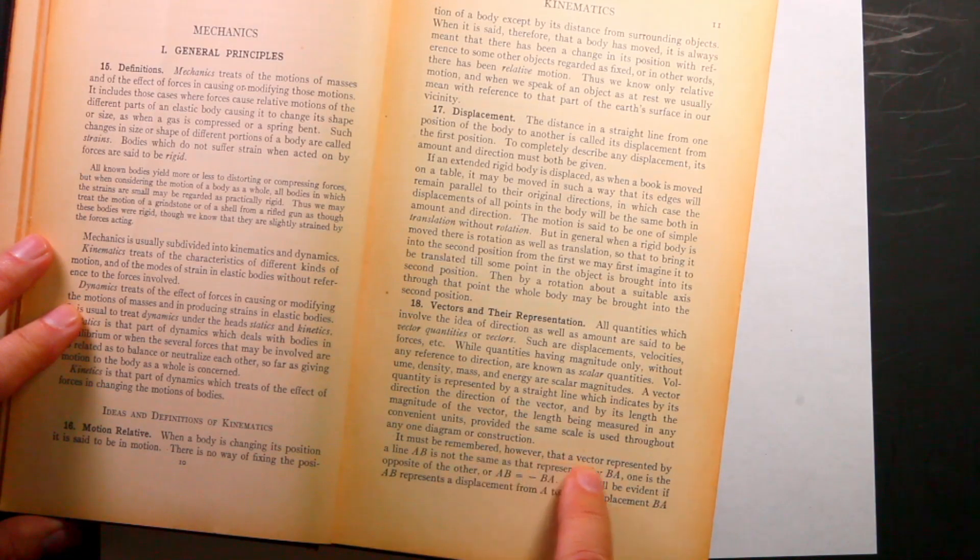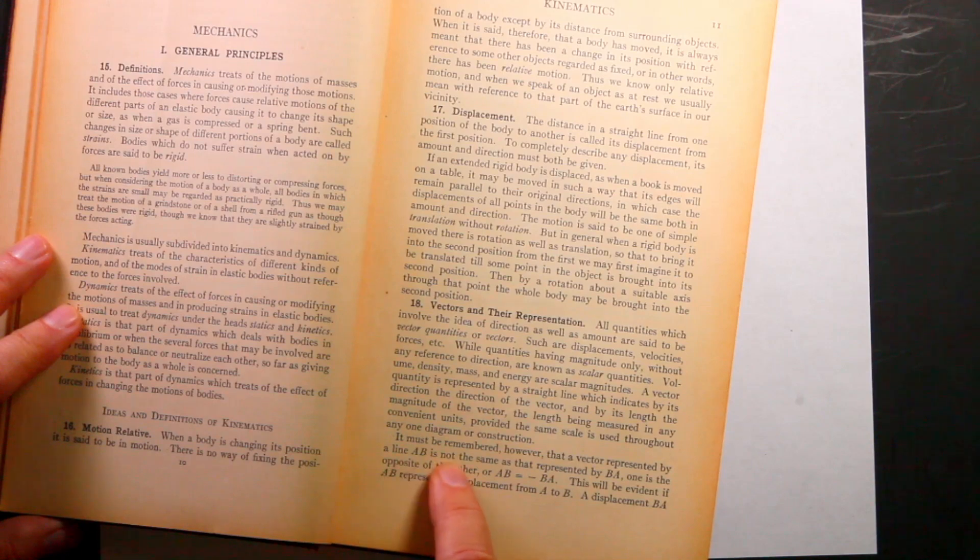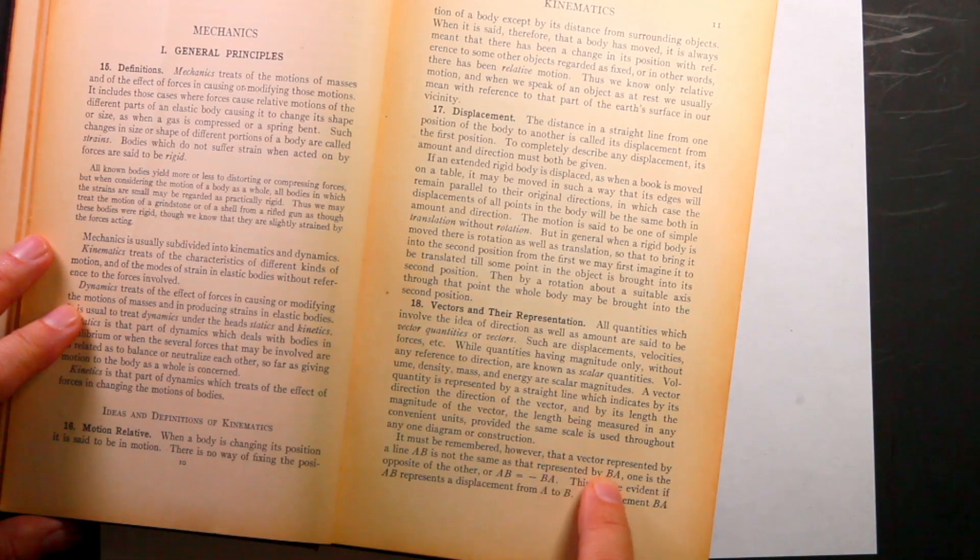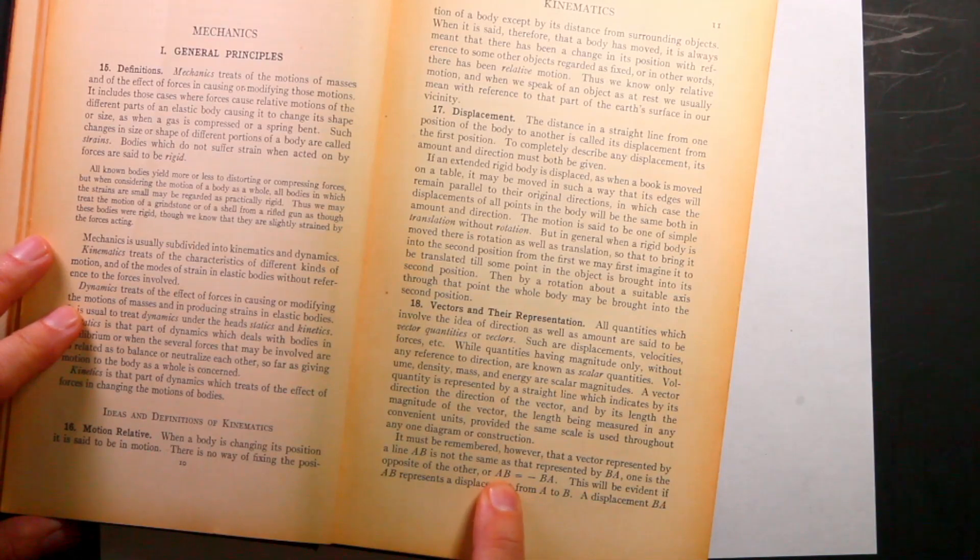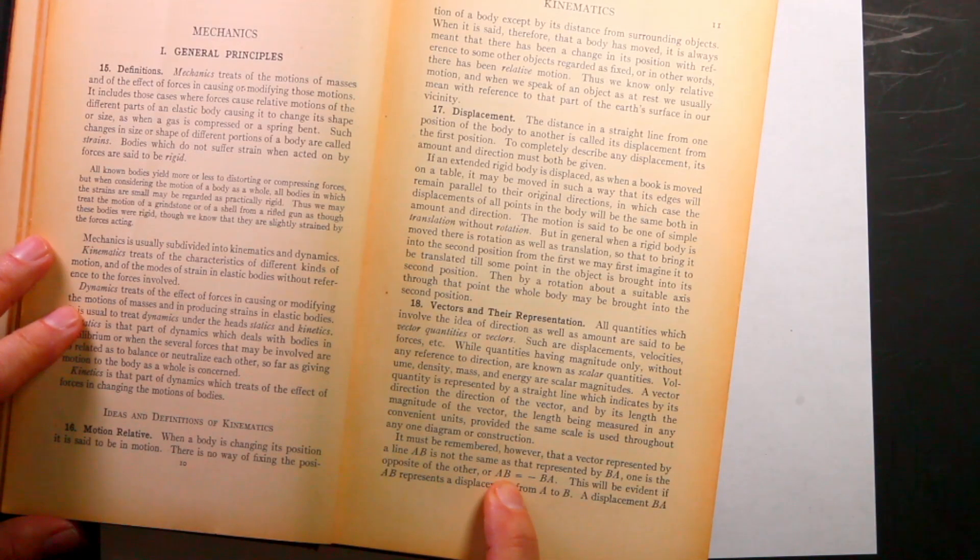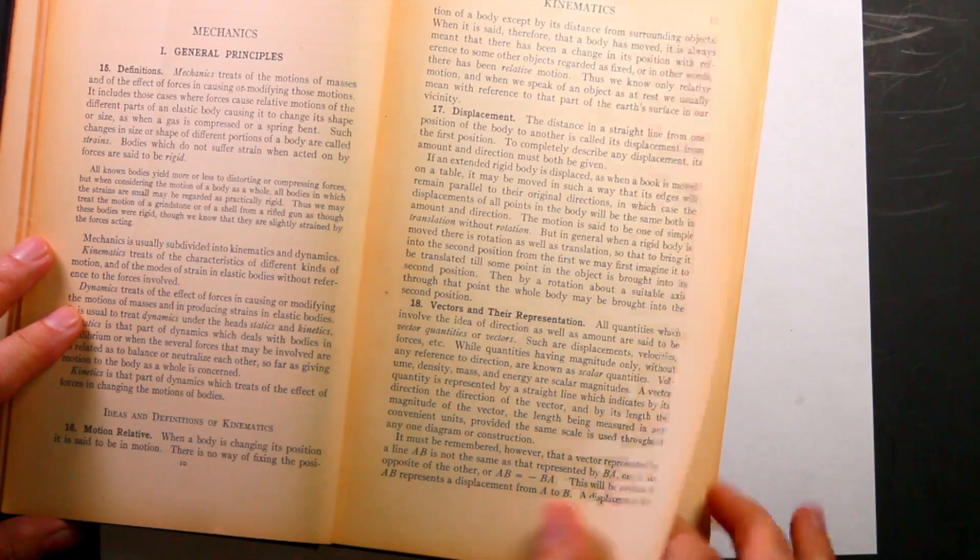Now, here's the interesting thing that we don't see. It must be remembered, however, that a vector represented by line AB is not the same as that represented by BA. So there's direction, but we don't see this. We don't represent vectors as though you would in geometry. I mean, in geometry, a lot of times use this line AB stuff, but we don't see that anymore.